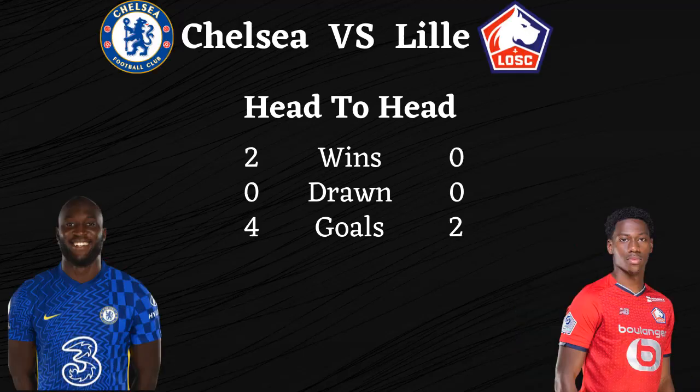Chelsea vs Lille. Head to head — Chelsea has 2 wins, 0 draws. Goals scored: Chelsea 4, Lille 2. Chelsea has won 2 Champions League titles, and Lille has 0 Champions League titles.